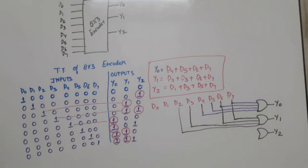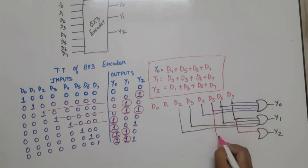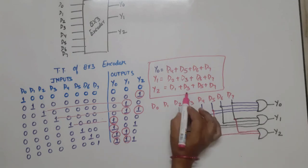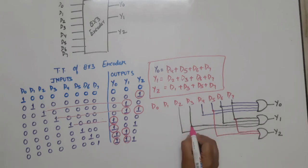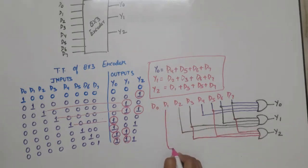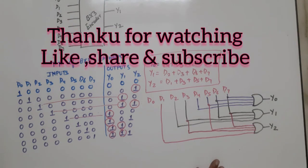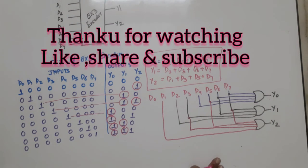For Y2, the expression connects D7, D5, D3, and D1. So this is the logic diagram of the octal to binary encoder. Thank you so much.